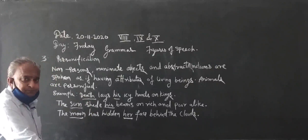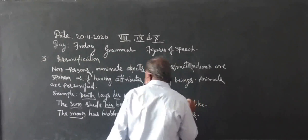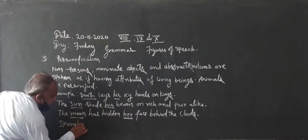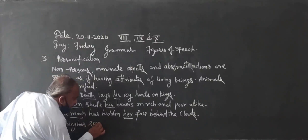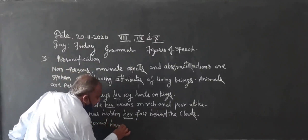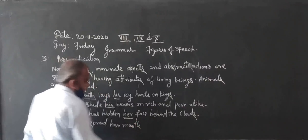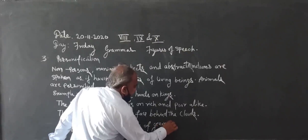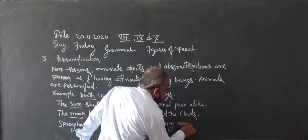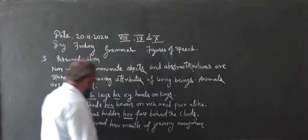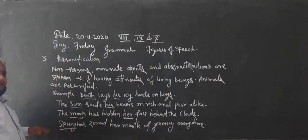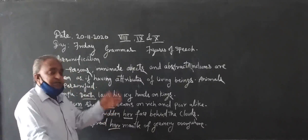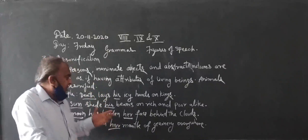For some more examples: 'Spring has spread her mantle of greenery everywhere.' Here 'her' is used because spring is smooth. Whichever is hard, it is brought into masculine. Whichever is smooth, it is brought into feminine. I think you might have understood this.